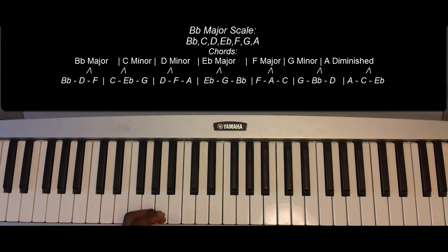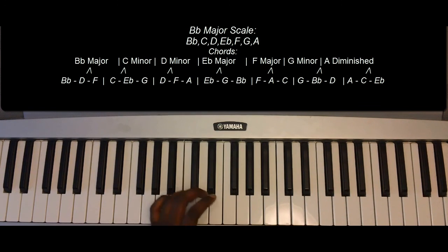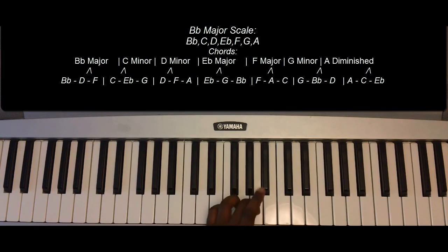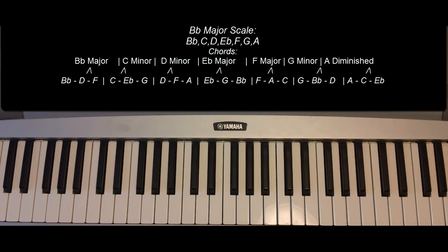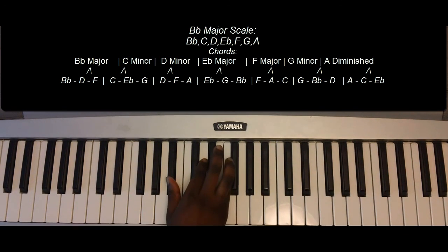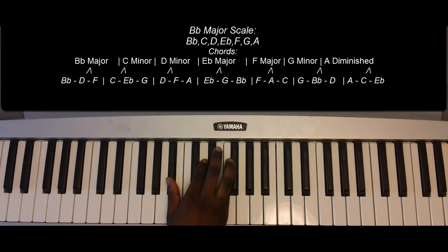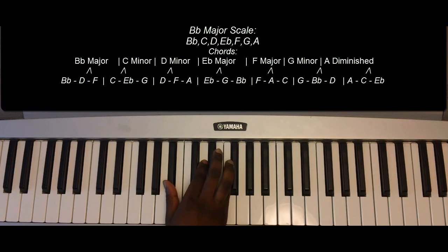And going at regular speed, that is the B-flat major scale. The chords of the B-flat major scale are as follows: B-flat major — B-flat, D, F.